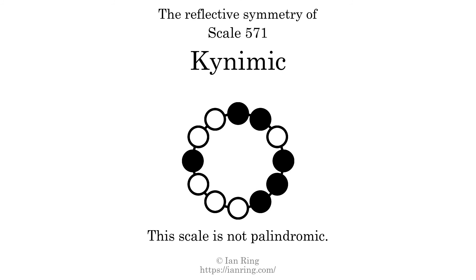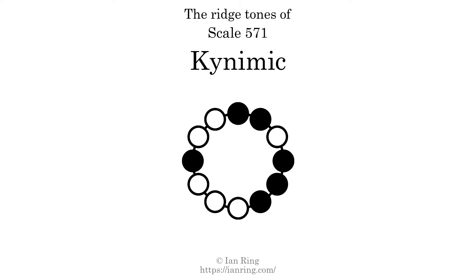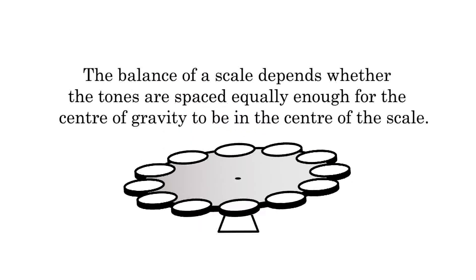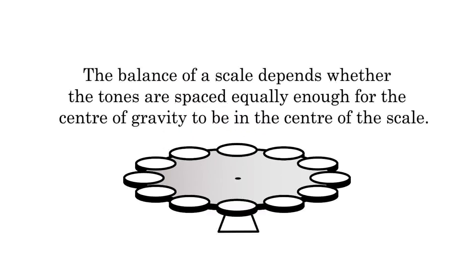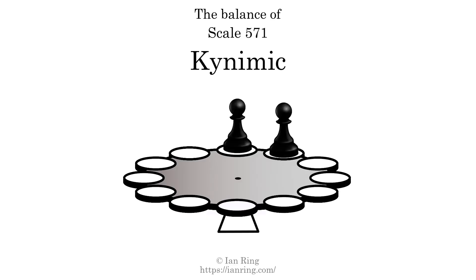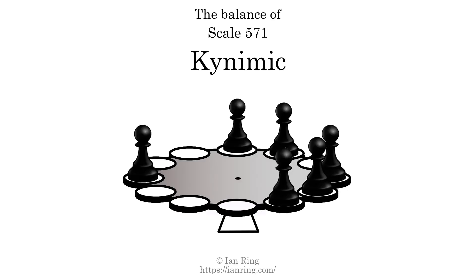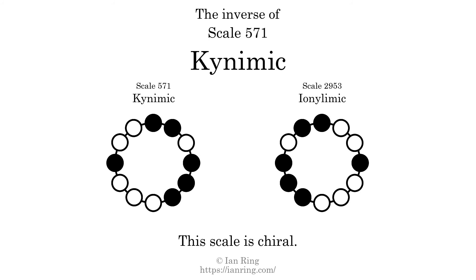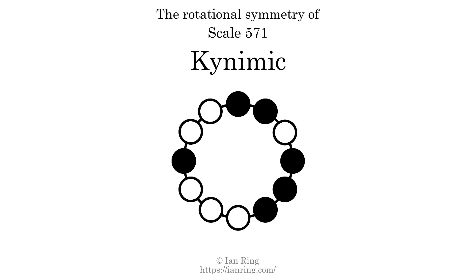This scale has no reflective symmetry. This scale has a different pattern of intervals ascending and descending, so it is not palindromic. This scale has no ridgetones. The balance of a scale depends whether the tones are spaced equally enough for the center of gravity to be in the center of the scale. This scale is not balanced. The inverse of a scale is a mirror image — it is what you get when the sequence of intervals is reversed. The inverse of this scale is scale 2953, also known as ionolimic. This scale is chiral; it cannot transform into its inverse by rotational transformation. This scale has no rotational symmetry.